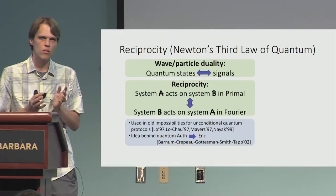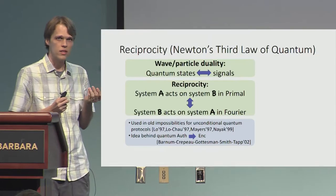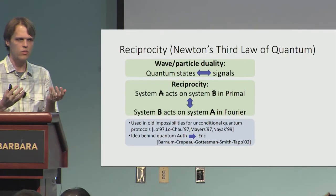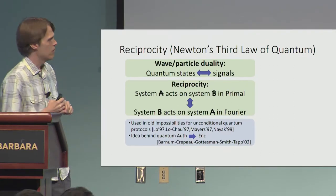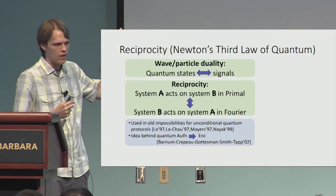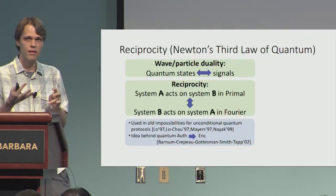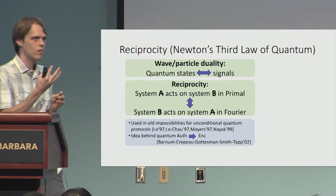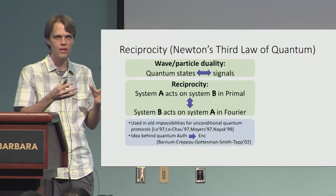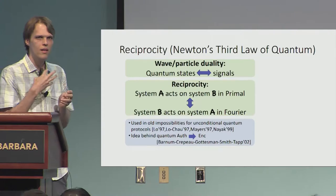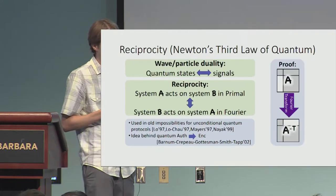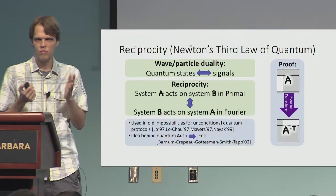This reciprocity has been used in a lot of places — in old impossibility results for unconditionally secure quantum protocols, and also as the idea behind the classical result that quantum authentication implies encryption. If you had a quantum authentication scheme that did not imply encryption — if you're actually able to learn something about the state — that's essentially saying the encryption is acting on your state. When you look in the Fourier domain it says you are actually acting on the quantum state, therefore violating authentication.